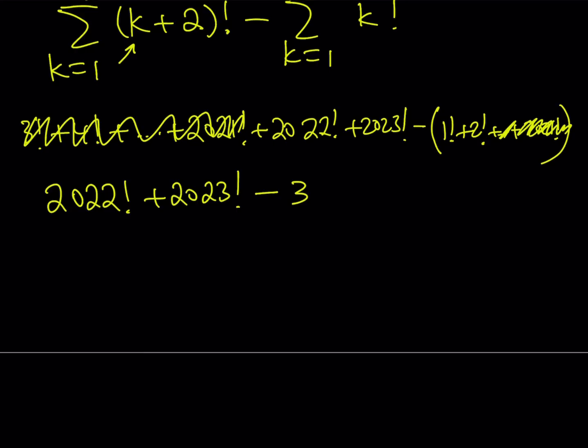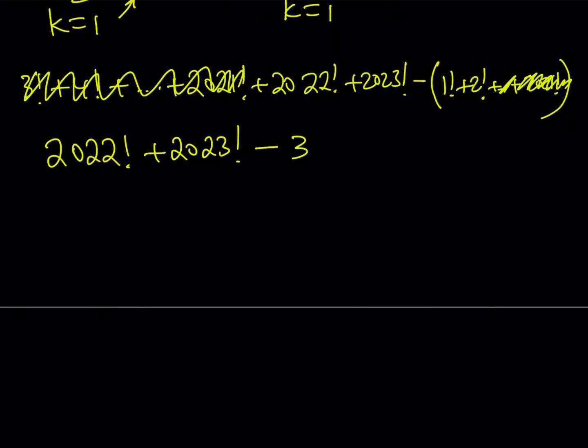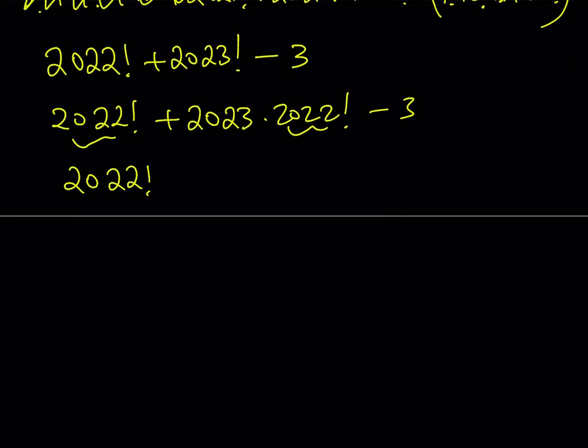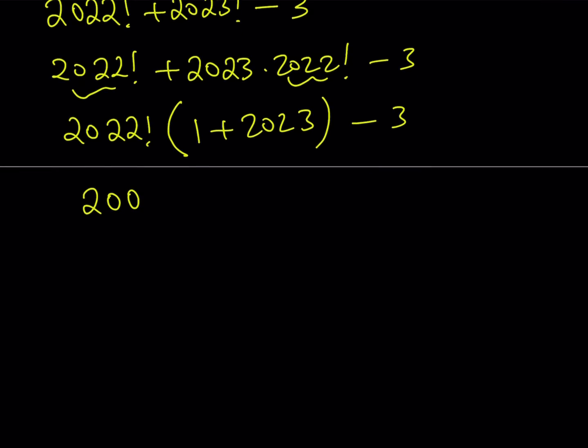This can be simplified a little bit more. If you consider the fact that 2023 factorial contains 2022 factorial, we can write this second term as 2023 times 2022 factorial. Now we can factor this out. It's not a huge improvement, but still looks a little simpler. We're going to get 1 plus 2023 inside the parentheses minus 3. This basically can be written as 2024 times 2022 factorial minus 3.